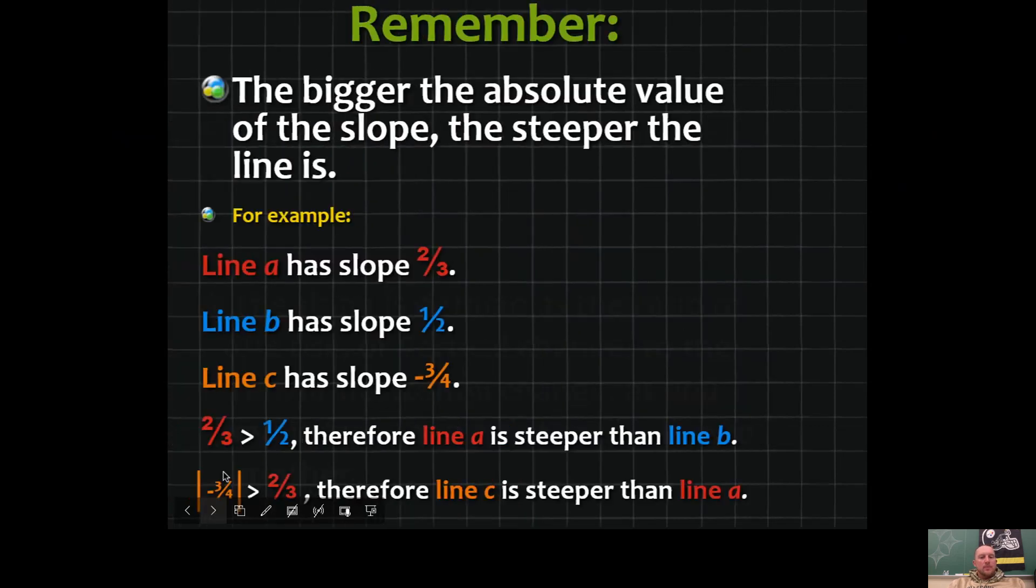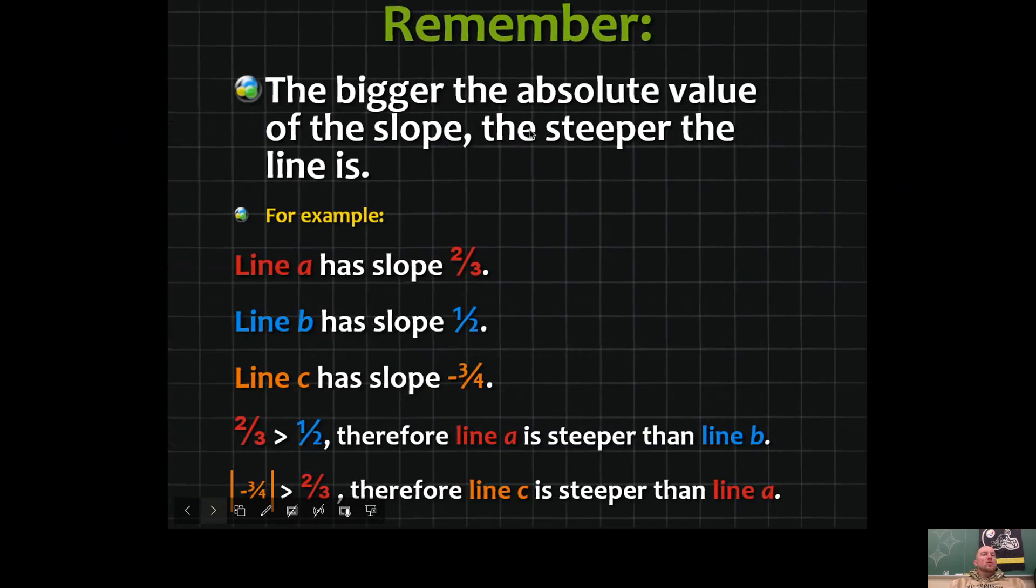How do you know when something is steeper than something else? Well, if you have the slope for three different lines, the bigger the absolute value of the slope, the steeper the line is.